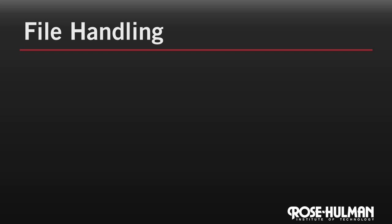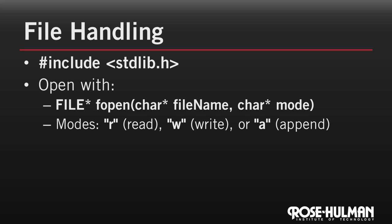There are just a few points to remember when working with files in C. First, you need to make sure you pound-include the standard lib header file. This gives you access to the file handling functions. You open a file in C using the fopen function. fopen takes a string giving the file name and another giving the mode that you want to use for accessing the file.